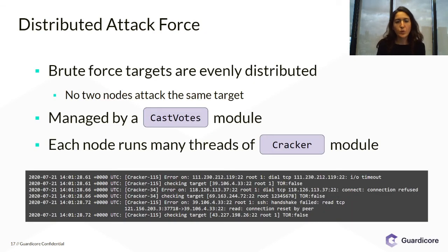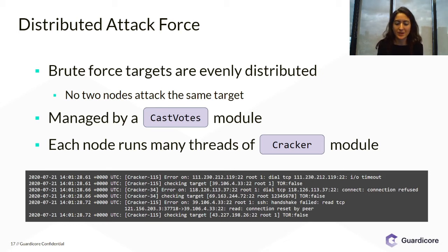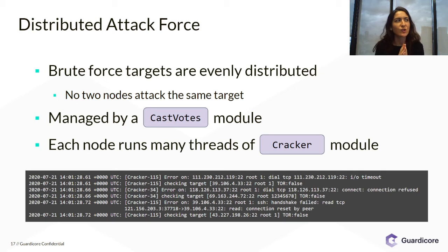This was a zoom-in on a single infection process, but it's important to remember that the whole network is engaged in this brute force effort and the attack force is much bigger this way. What's interesting about FritzFrog is that it's very intelligent in the way it manages this attack force. We noticed that no two nodes ever target the same IP address — there's no intersection between the target lists of two nodes in the network.